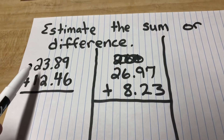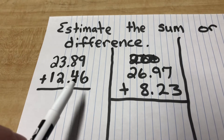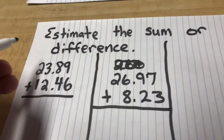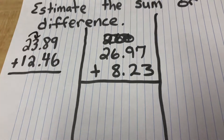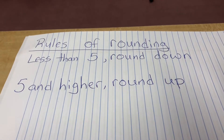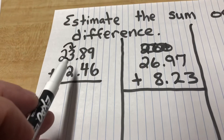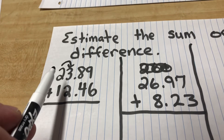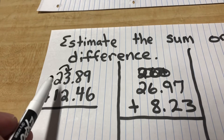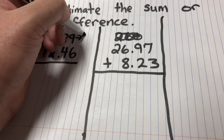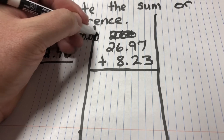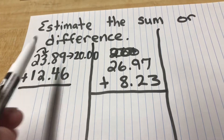So in 23 and 89 hundredths plus 12 and 46 hundredths, we're going to look at the two and the one, rounding to that place. When I look at the two, I focus on the three — and the three gives me instructions. The rules of rounding say less than five means round down, so the three tells me to round down. Rounding down means keeping it a two; everything after becomes zero. The three, eight, and nine all become zero, leaving me with 20.